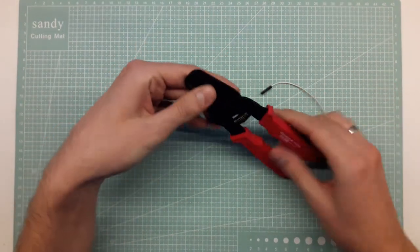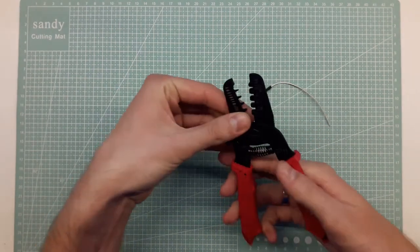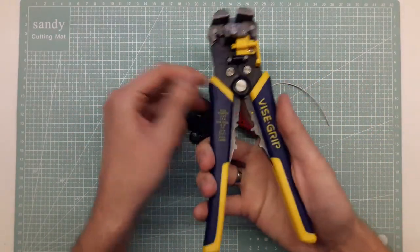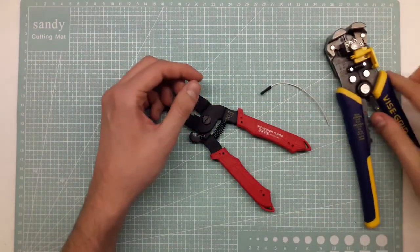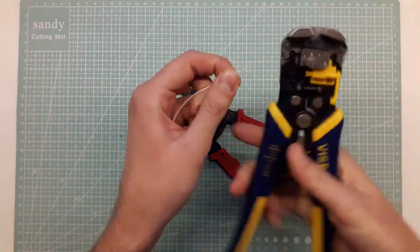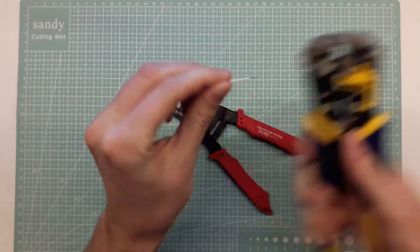What it doesn't come with is a wire stripper so you have to have a plier or knife or something like this to strip the wire. So let's have a look at the difference between the Engineer one and let's call it the random one.